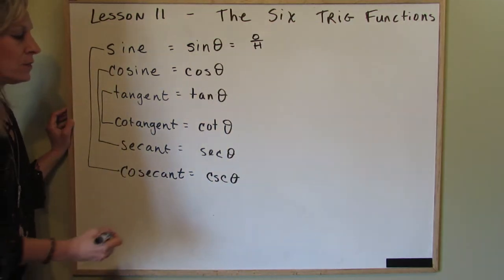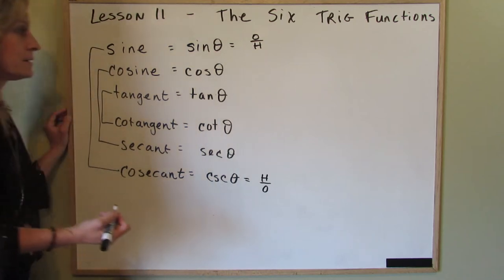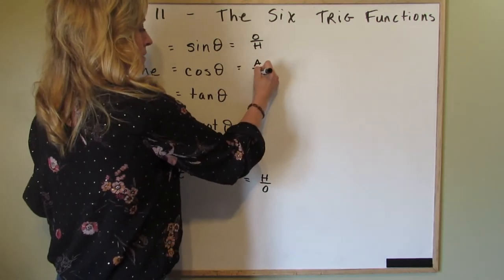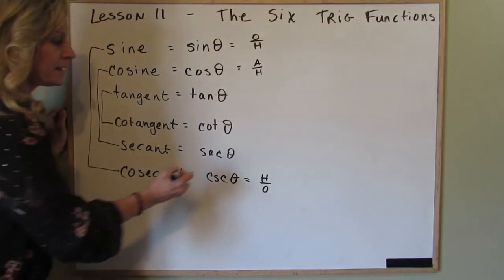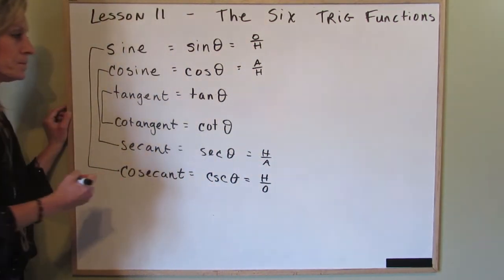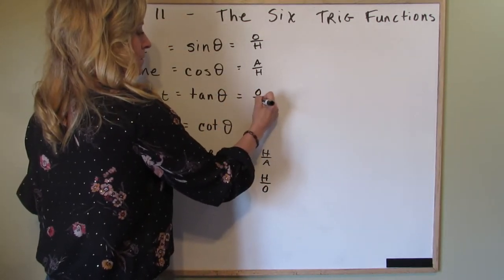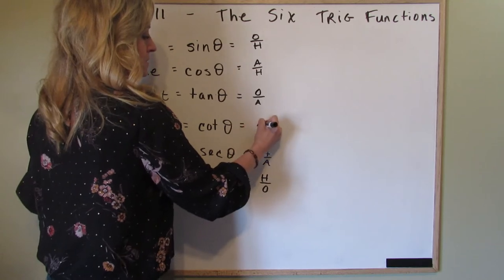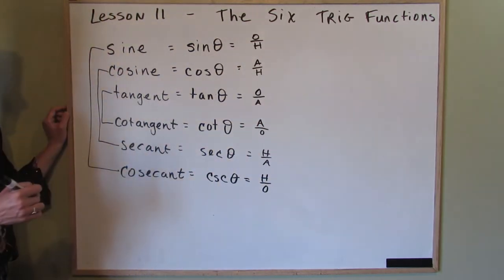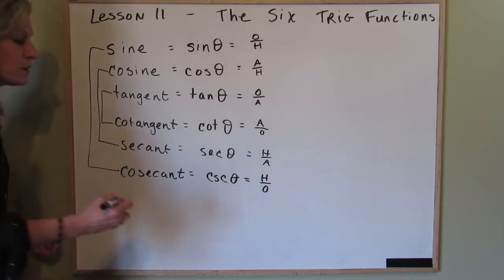We learned that the sine was opposite over hypotenuse, therefore the cosecant is the hypotenuse over the opposite. The cosine is the adjacent over the hypotenuse, so the secant is the hypotenuse over the adjacent. The tangent — remember SOH-CAH-TOA — is opposite over adjacent, so the cotangent is adjacent over opposite.